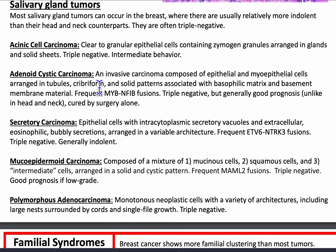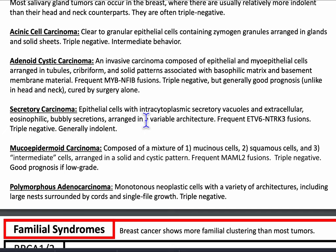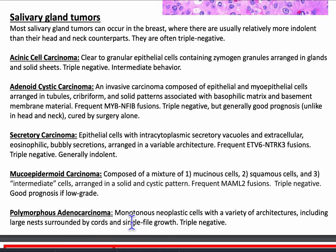Adenoid cystic carcinoma is an invasive carcinoma composed of epithelial and myoepithelial cells arranged in tubules, cribriform, and solid patterns associated with basophilic matrix and basement membrane material. Frequent MYB-NFIB fusions, triple negative, but generally good prognosis unlike in head and neck — cured by surgery alone. Secretory carcinoma has epithelial cells with intracytoplasmic secretory vacuoles and extracellular eosinophilic bubbly secretions in variable architecture; frequent ETV6-NTRK3 fusions, triple negative, and generally indolent. Mucoepidermoid carcinoma is composed of mucinous cells, squamous cells, and intermediate cells in a solid and cystic pattern; frequent MAML2 fusions, triple negative, good prognosis if low-grade. Polymorphous adenocarcinoma has monotonous neoplastic cells with a variety of architectures including large nests surrounded by cords and single-file growth; triple negative.